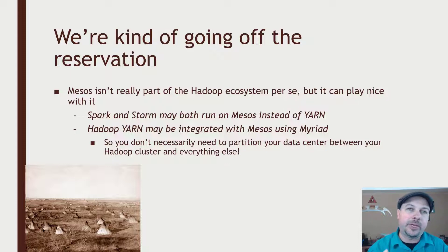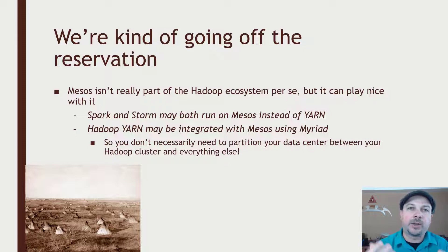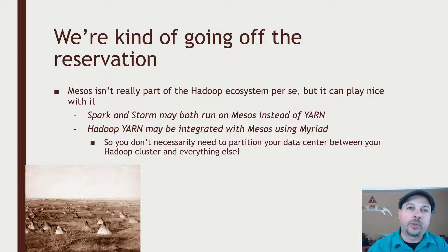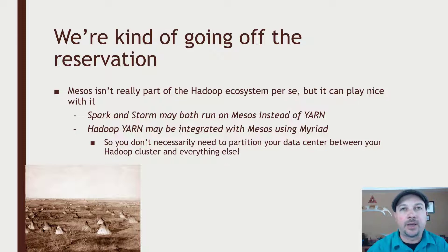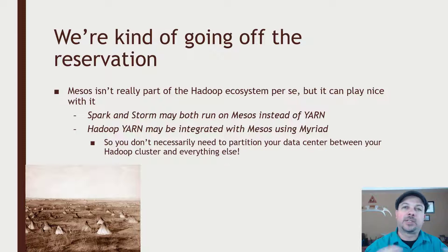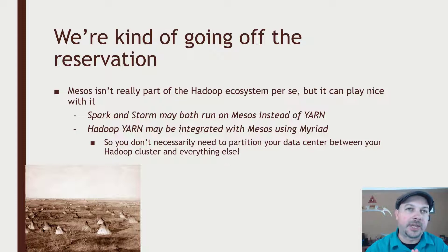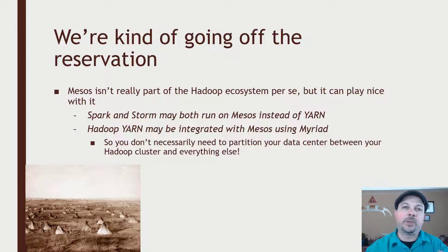Mesos isn't technically part of the Hadoop ecosystem, but there are components of the Hadoop ecosystem that can operate on top of Mesos instead of Yarn. The two noteworthy ones are Apache Spark — which was actually originally written for Mesos and not Yarn, so Spark does have good support for Mesos if you have a Mesos cluster already running — and Apache Storm, something we'll talk about in the next couple of sections, which also can run on top of Mesos instead of Yarn. Storm is used for processing streaming data in real time.